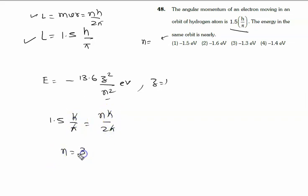The n value is given to us. Now we will put this formula. We will put E equal to minus 13.6 Z square, 1 square is 1, n square is 3.